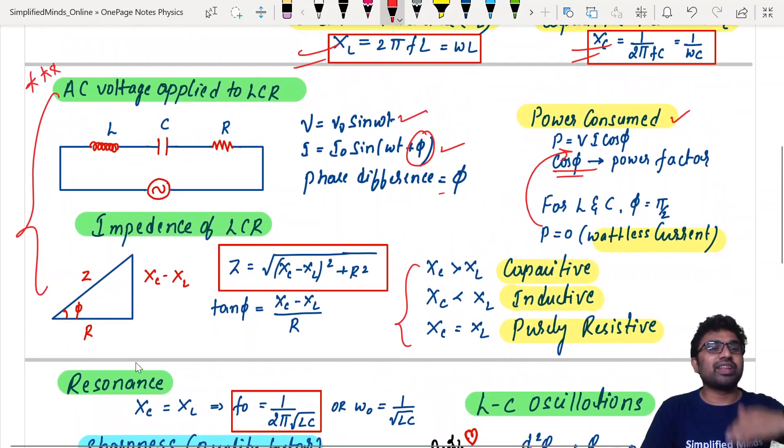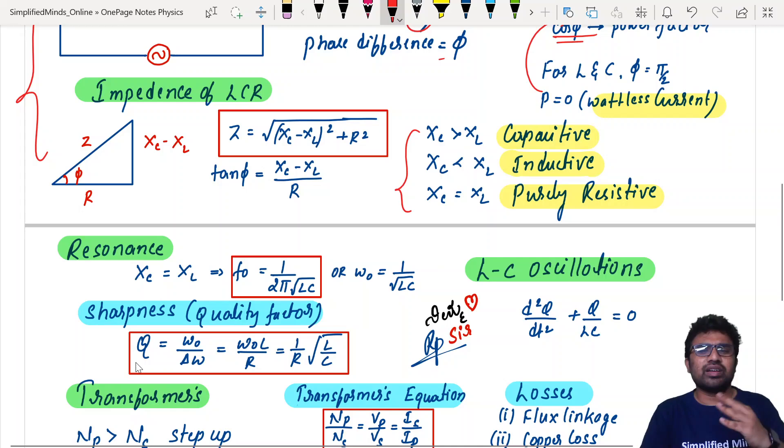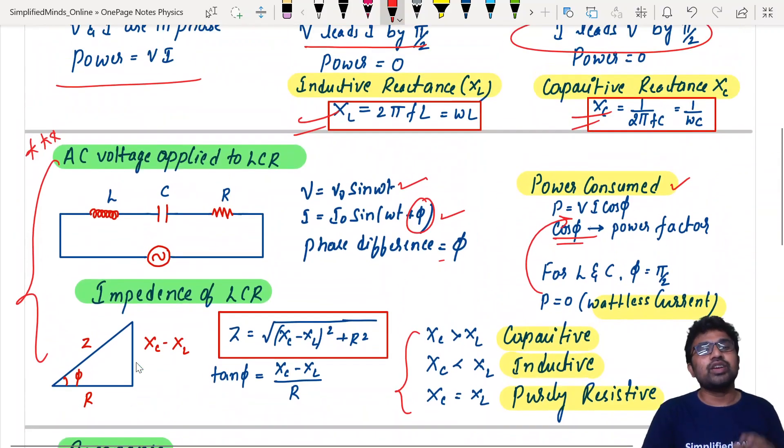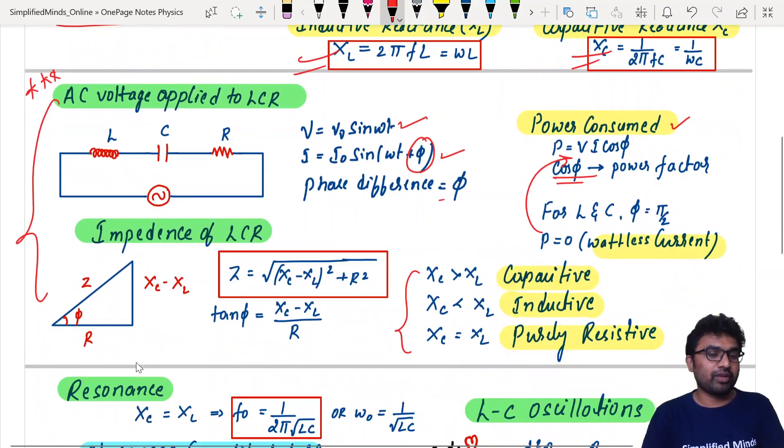They'll give resonance condition with LCR circuit and ask you to check whether circuit is capacitive, inductive. Same question even in CUET. LCR circuit is a very important concept for your AC. AC voltage applied to LCR circuit is an important mechanism. And also, next coming to resonance.